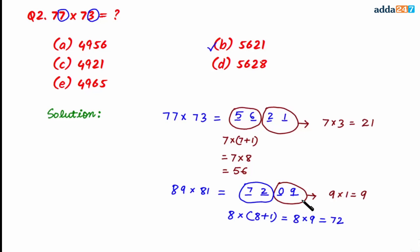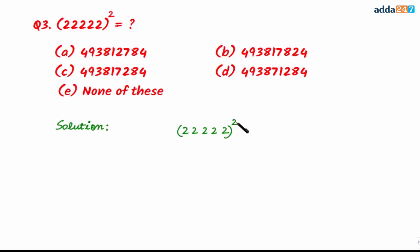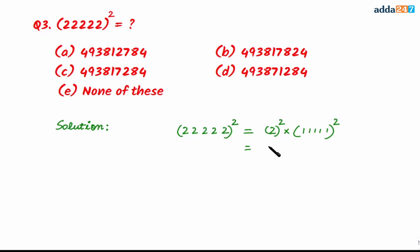Question number three: we have to find the square of 22222. Here the digit 2 is repeated five times. The rule is to write 2 squared multiplied by the square of 11111 — since we have five twos, we use five ones inside the bracket, all raised to power 2. This gives 4 multiplied by the square of 11111.